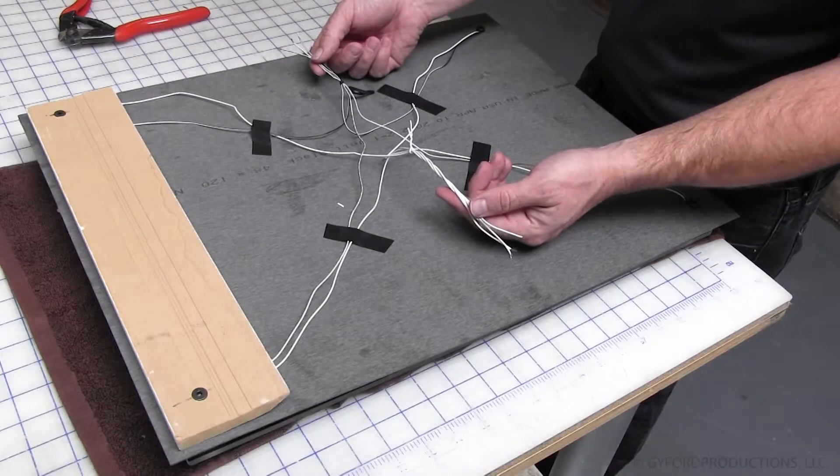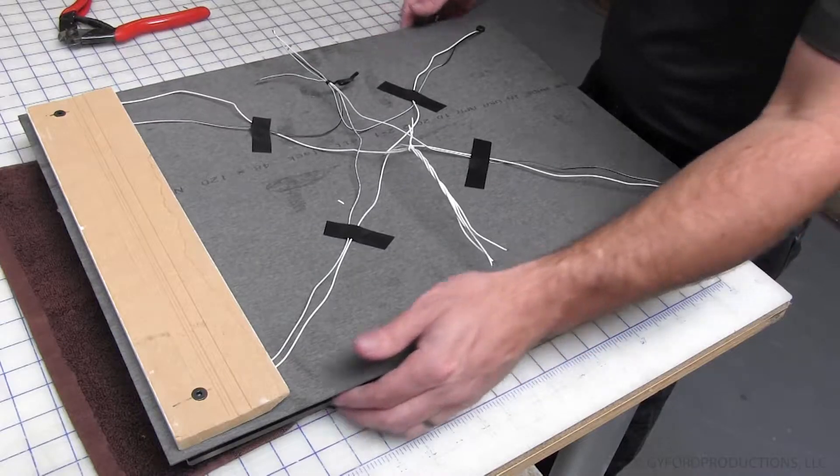Separate and organize the positive and negative wires behind the plate. Secure with zip ties, adhesives, or staples.